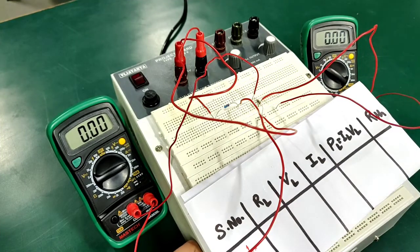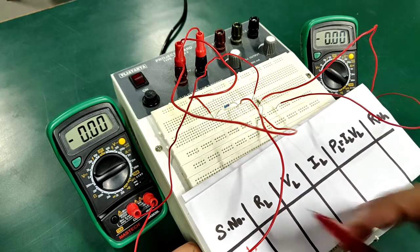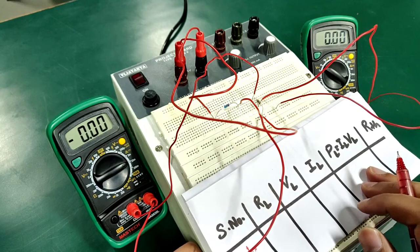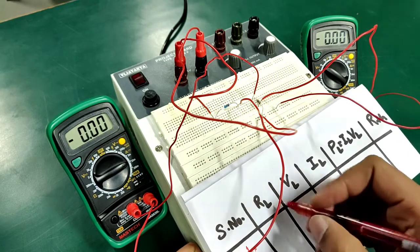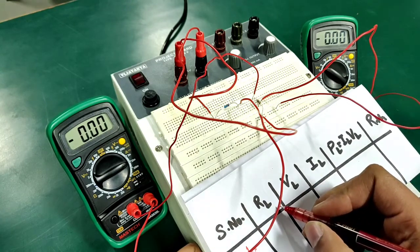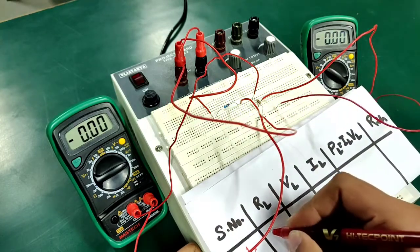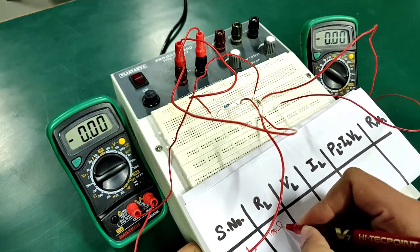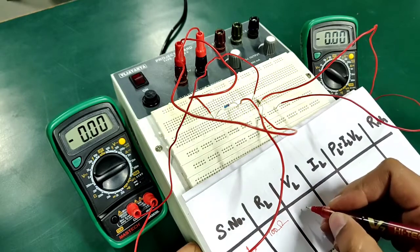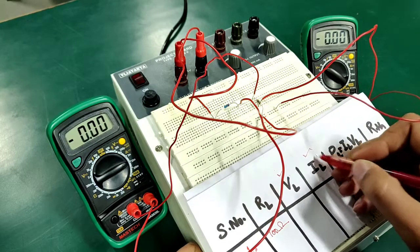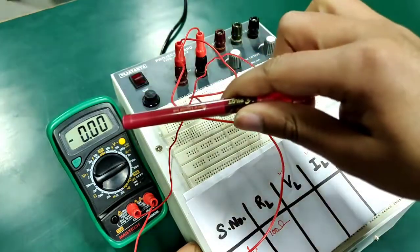To the next step, let us jot down the observation table. So in observation table these are the various data which we need for verification of maximum power transfer theorem. First of all we will be needing the value of RL. So in case number one I have kept RL equals to 100 ohms.